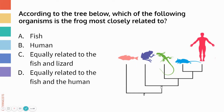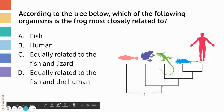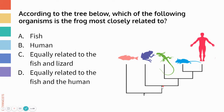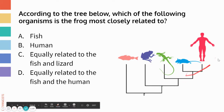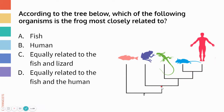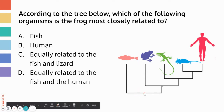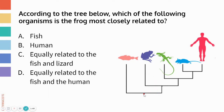Right here at this branching point — this node — that's the most recent common ancestor of the frog, lizard, mouse, and human. And more distantly in the past, here's the common ancestor of the fish and the frog. So the fish is the most distantly related to all of the organisms on this tree.